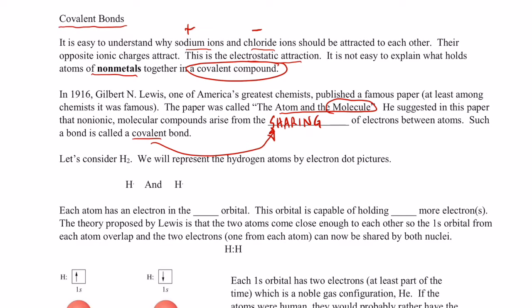So let's consider a very simple molecule and a very common molecule, H2. We are going to represent the hydrogen atoms by drawing their electron dot pictures. So you can see this hydrogen atom, it has one dot, remember its configuration is 1s1, and this hydrogen atom with one dot.